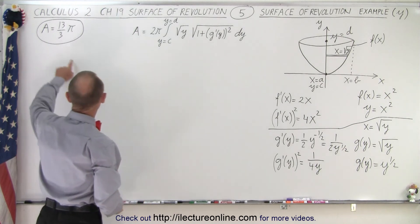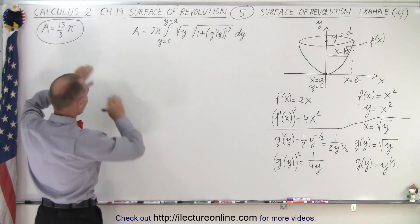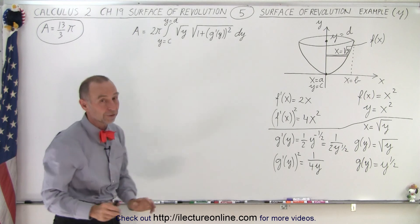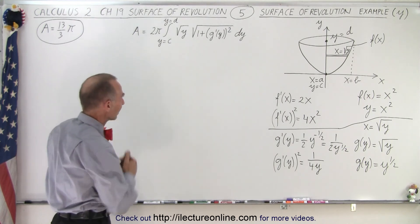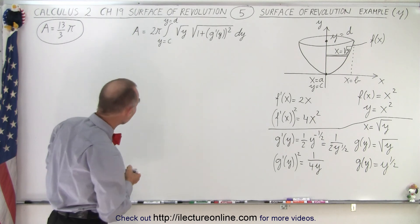The answer we got on the last video was the surface area of revolution was 13 over 3 times pi, and obviously we should get the same answer when we do it like this.